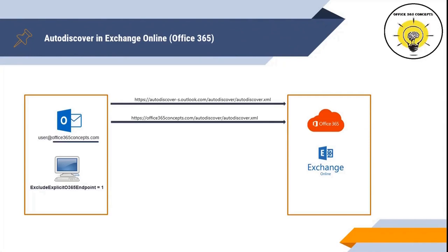For the root domain lookup, Outlook builds a URL from the domain name in the format https://domain.com/autodiscover/autodiscover.xml and tries to retrieve the payload. Because many root domains are not configured for Autodiscover, this lookup will typically fail.